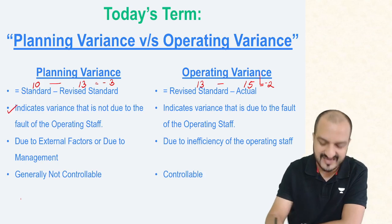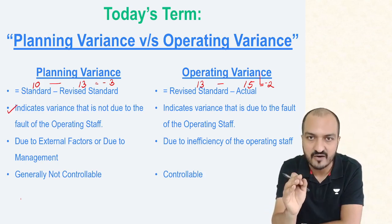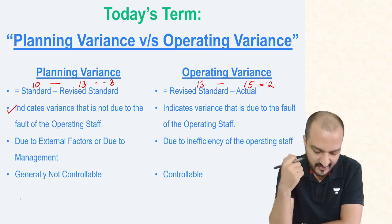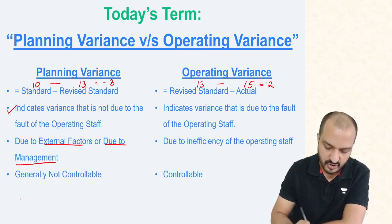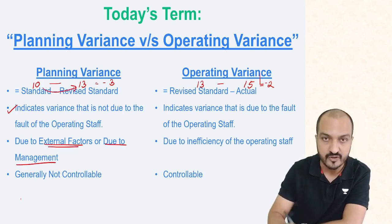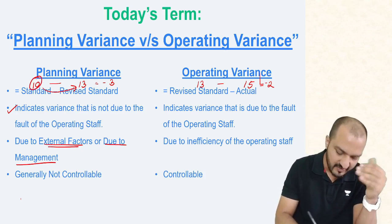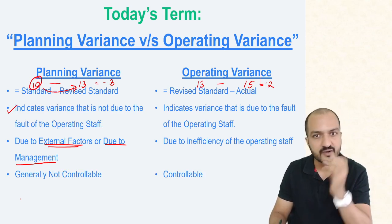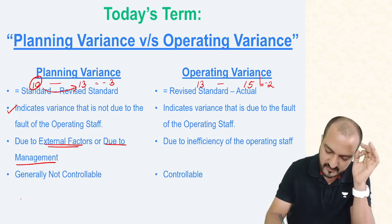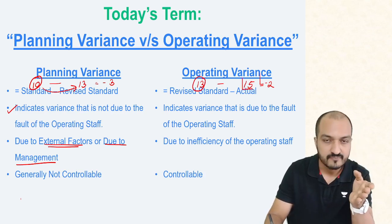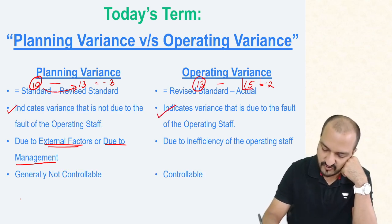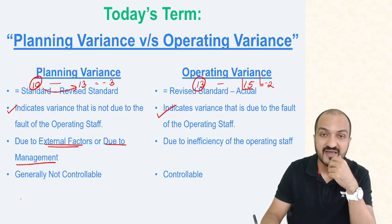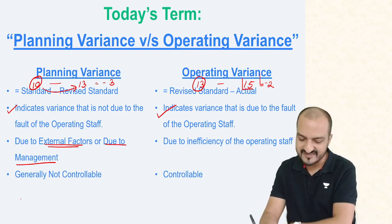Planning variance indicates a variance that is not due to the fault of the operating staff. It is due to external factors or management fault — the market price increased to 13, or the management's estimate of 10 was wrong. But that is not the fault of the operating staff. On the other hand, the market price being 13 while you paid 15 is clearly the fault of the operating staff — the purchase manager was inefficient and could not negotiate a good price. That is your operating variance.